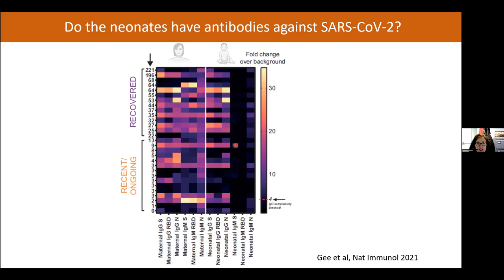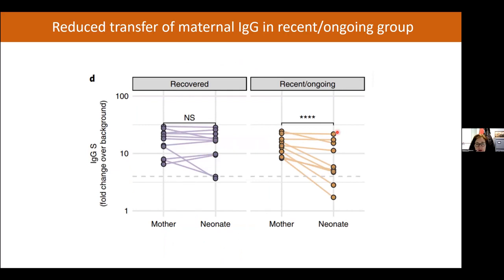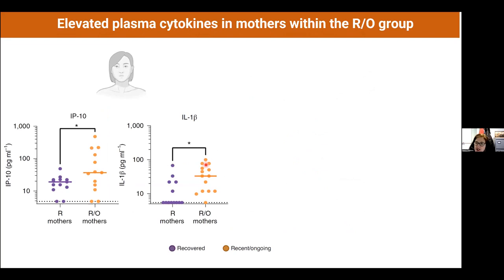Looking at mother-infant pairs, mothers with recent or ongoing infection tended to transfer less specific IgG to their neonate than recovered mothers, even when maternal levels were high. This may just reflect timing, but it does suggest that if you want to vaccinate, it is probably better to vaccinate in an earlier trimester rather than late in pregnancy, to ensure good antibody transfer to the infant.